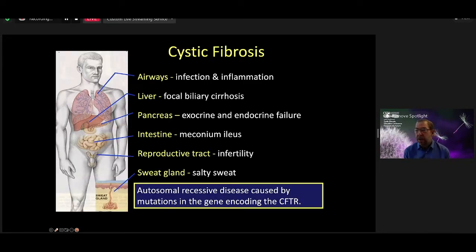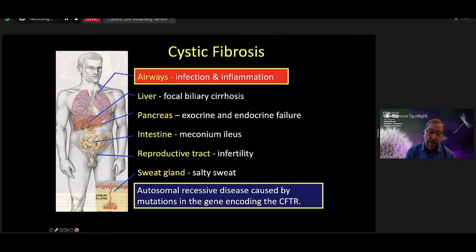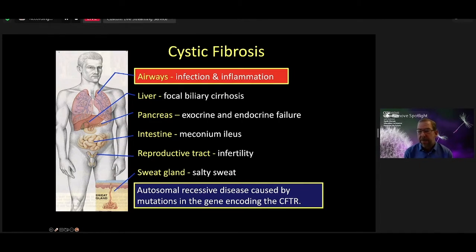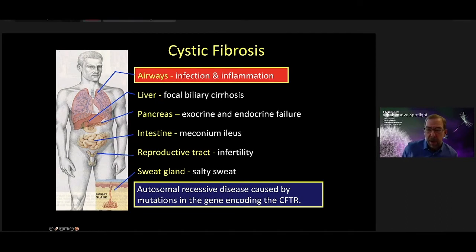Cystic fibrosis is a multi-organ system disease. It's an autosomal recessive disease caused by mutations in CFTR. Infections and inflammation in the airway are the most life-limiting aspect of the disease, and most of the active gene therapies that are getting close to clinical trials are focused on what they could do for the lung.